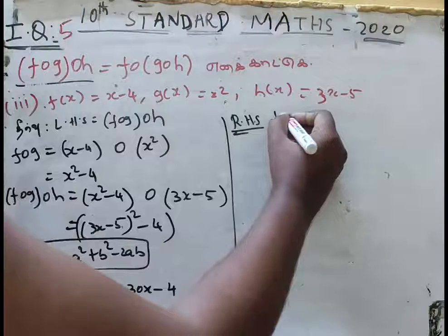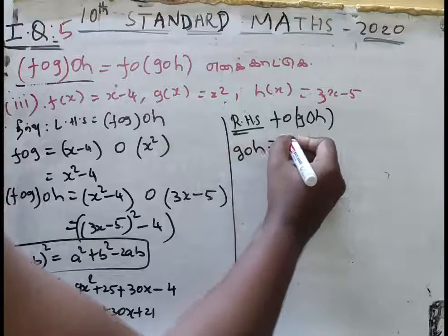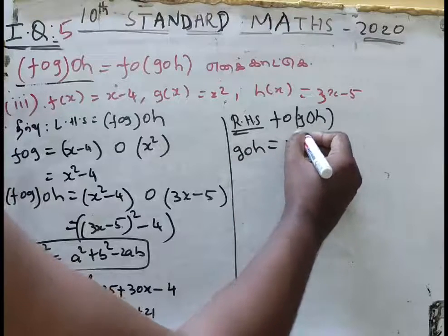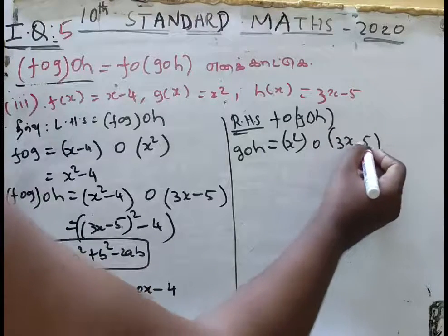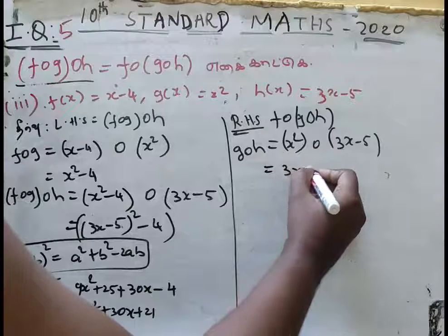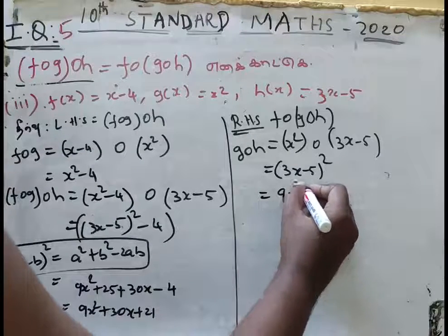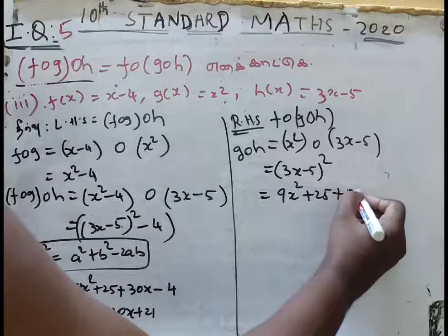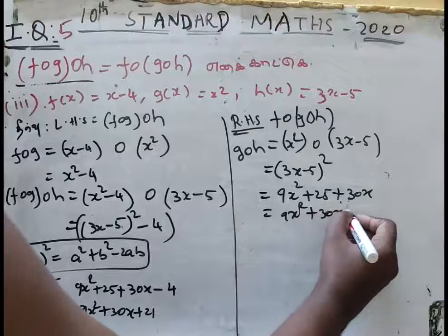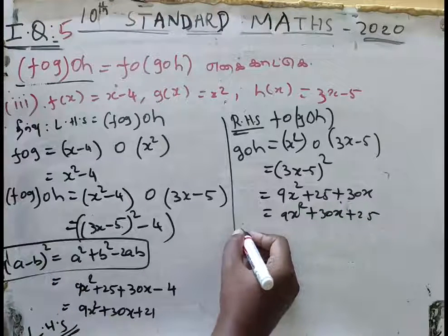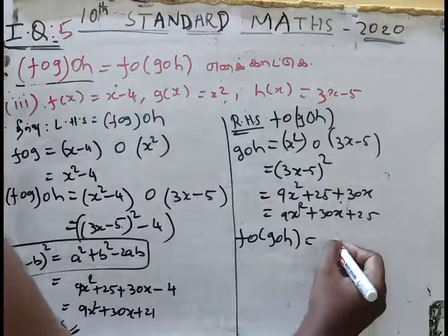Evaluating f of g of h — g of h gives x squared. Then g of x is x minus 5, so 3x minus 5 substituted: we get 9x squared plus 25 plus 30x, plus 3x minus 2, giving 9x squared plus 30x plus 25. Then f of g of h equals x minus 4.